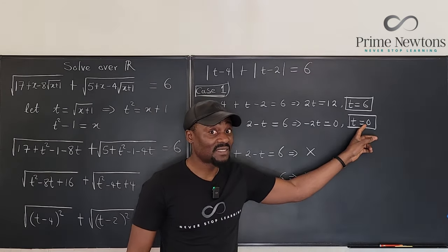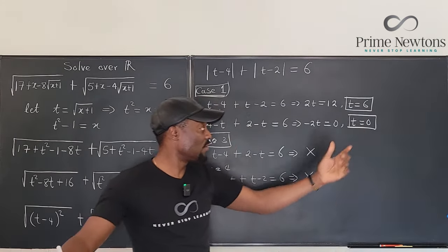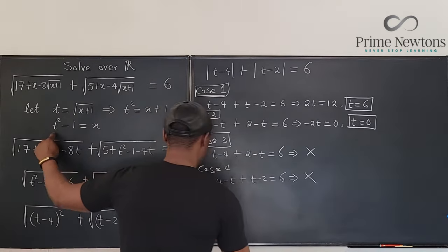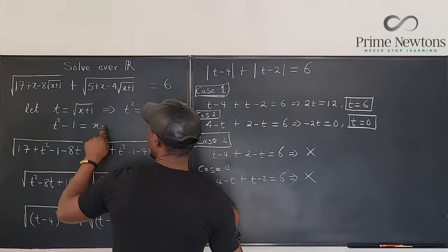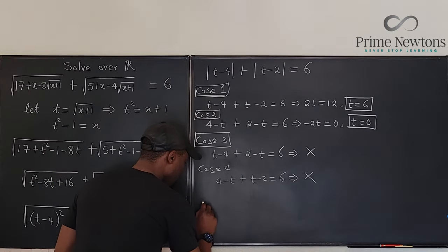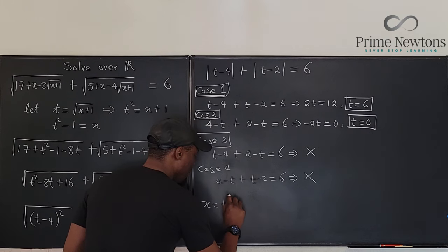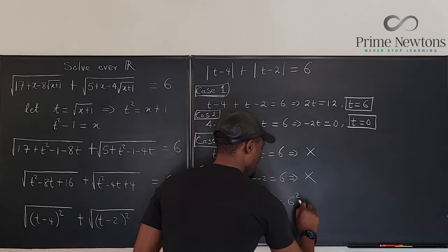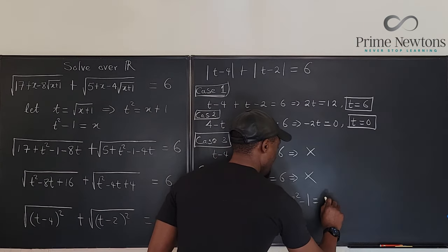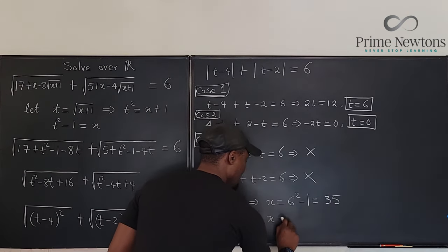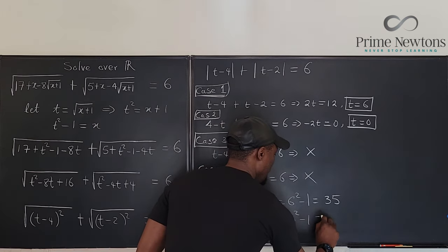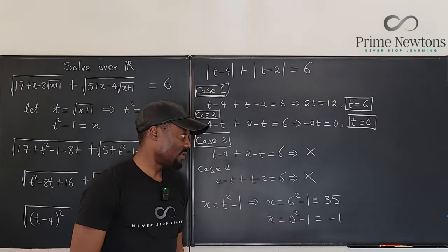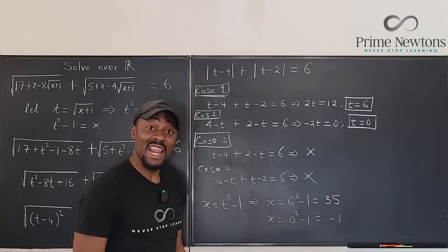But remember, the mission is to find x. We've gotten just two answers. I don't see any other way of getting another answer. And by that, we can go back here and say what was x? x is t squared minus one. So x equals t squared minus one, which implies x is equal to six squared minus one, which is 35. Or x equals zero squared minus one, which is minus one. And those are the two answers to this equation.